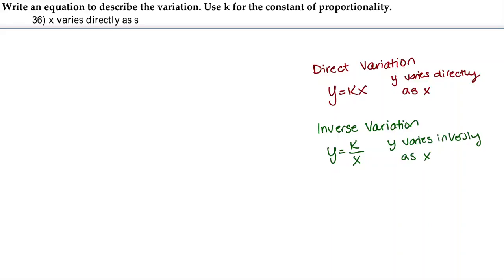And then there is joint variation, which is written out as y equals kxz. And this can be written out as y varies directly as x and z. So in other words, two or more variables.